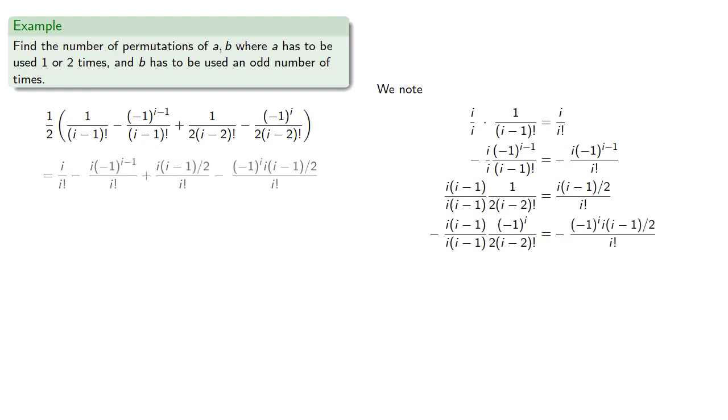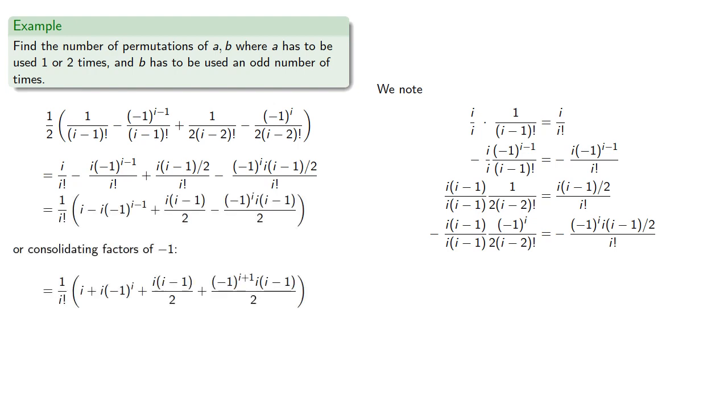And so we get the combined expression, and let's split off that factor of 1 over i factorial, and we'll consolidate the factors of negative 1.